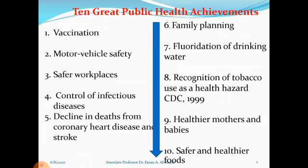Healthier mothers and babies is an achievement accomplished through the establishment of good maternal and child health services, providing care before, during, and after pregnancy to ensure good maternal health and a healthy baby. Finally, safer and healthier food — the provision of safe and healthier food — is also an important public health achievement.